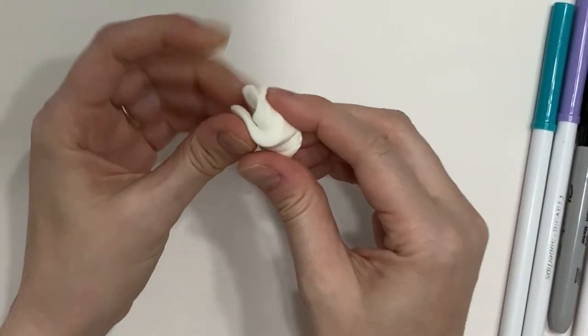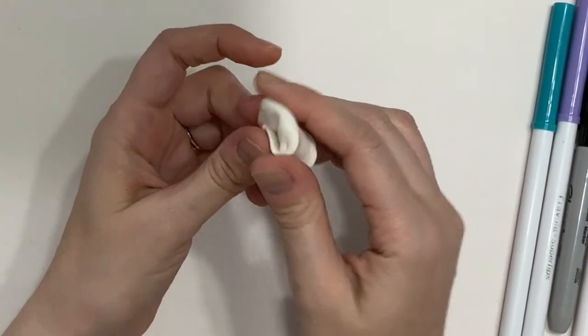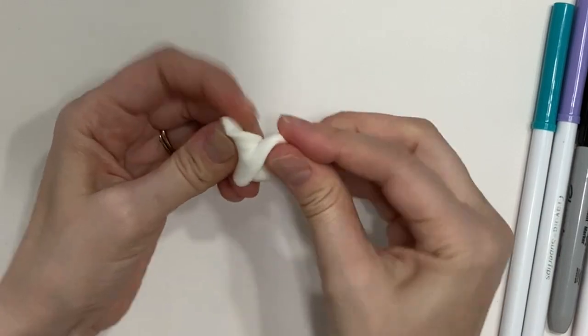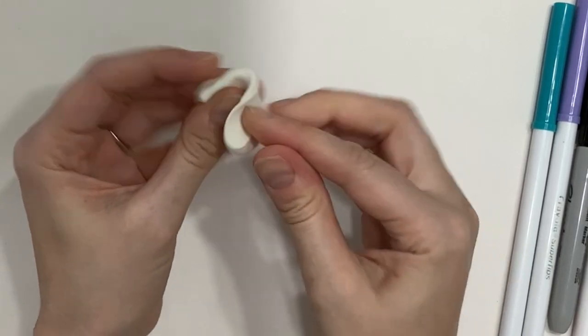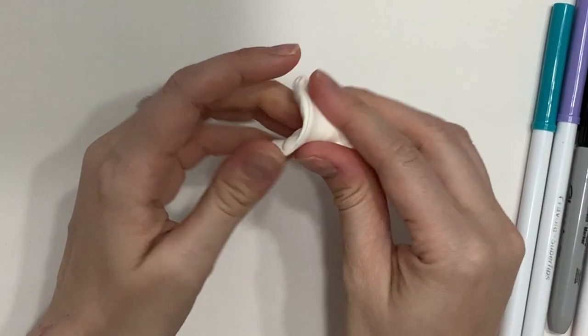So one of the first things you'll want to do is you'll kind of want to squeeze the Model Magic and kind of pull it apart a little bit to make it a little bit softer and easier to work with.